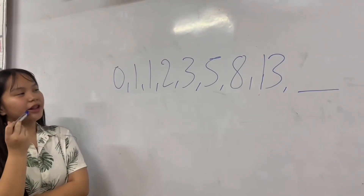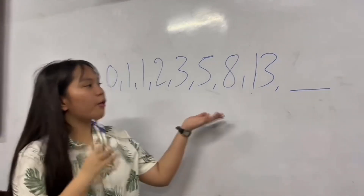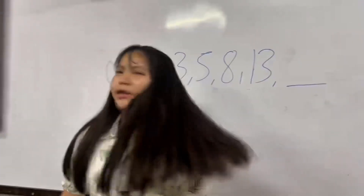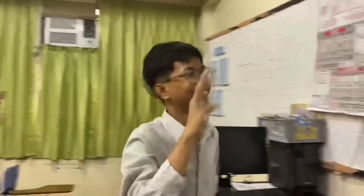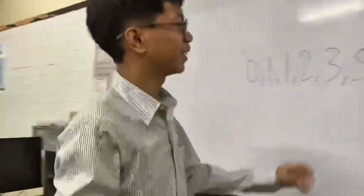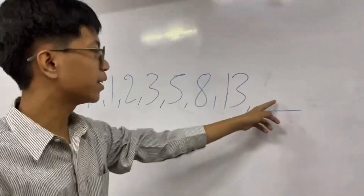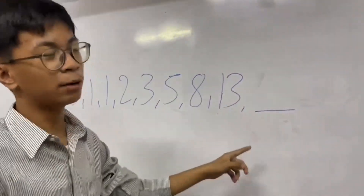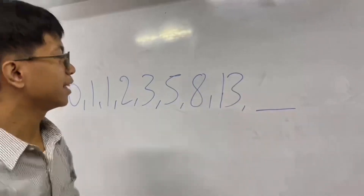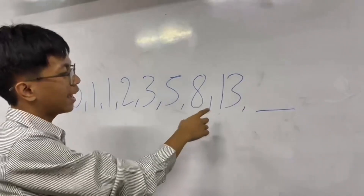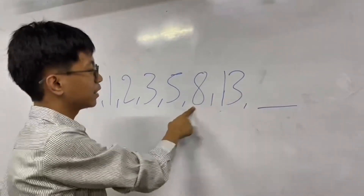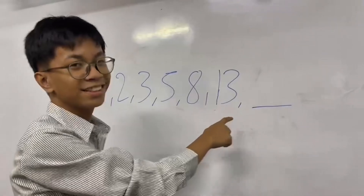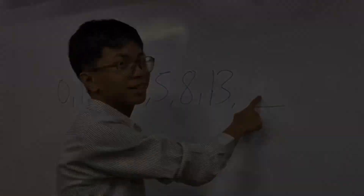I'm curious about what comes up to 13. Now, where is Mark? I'm here. So the next term will be 21. How did I get 21? I added 13 to the previous term, which is 8. 8 plus 13 equals 21.